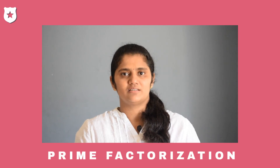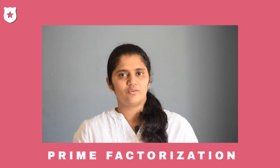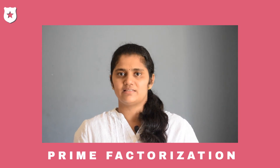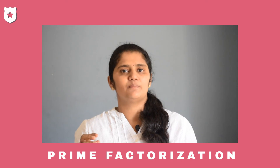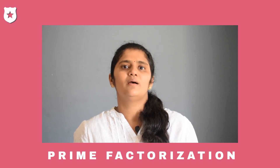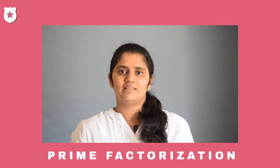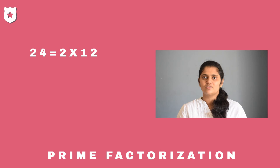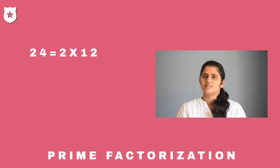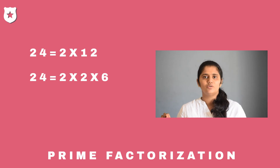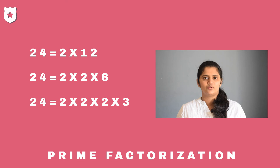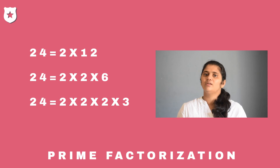Let's learn prime factorization. Expressing a number as a product of its factors is called factorization. If you are able to express a number as a product of prime numbers, it is called prime factorization. Let's take the number 24. 24 is equal to 2 into 12, which is 2 into 2 into 6, which is equal to 2 into 2 into 2 into 3. Now 24 is having only prime factors. This is called prime factorization.